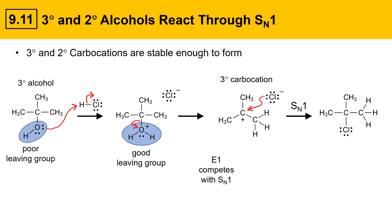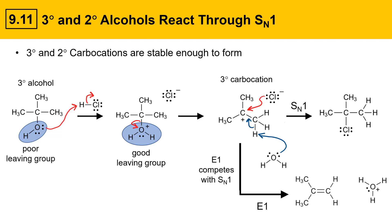E1 mechanisms can compete with SN1 mechanisms. An alternative pathway would be for the carbocation to get deprotonated by a weak base like water in an E1-type reaction, where the water grabs a proton off the beta position, and that gives an alkene product. SN1 and E1 reactions tend to occur together, and this was covered previously in the chemistry of alkyl halides.